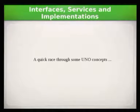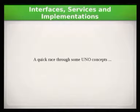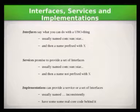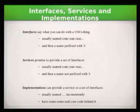I will do a quick race through UNO concepts again. I did that already once, but it's always helpful just to get an idea of how the stuff in scripting actually works. In UNO, you have interfaces, services, and implementations. Interfaces are the stuff that define what you can actually do with something. And usually they are named com.sun.star.something, and they start with an X. That's roughly how you can tell it's an interface.